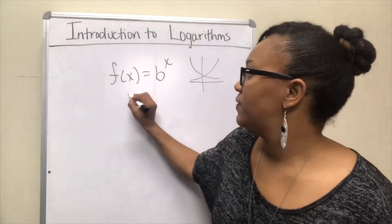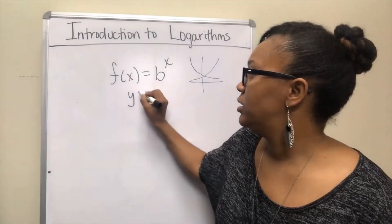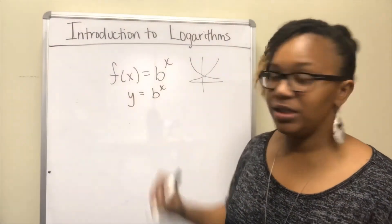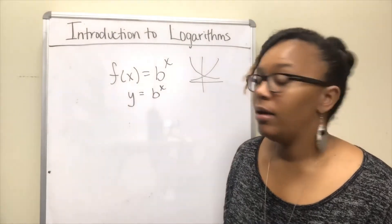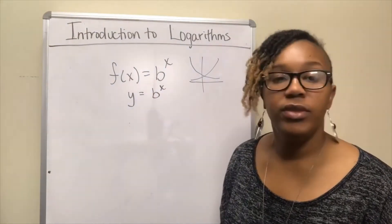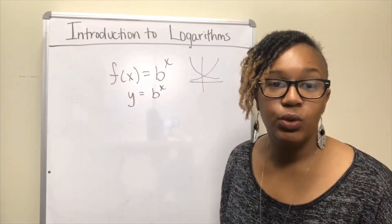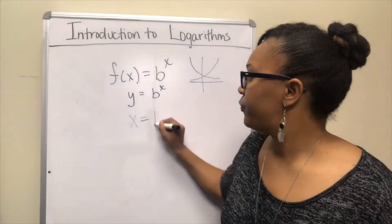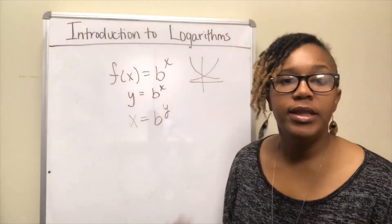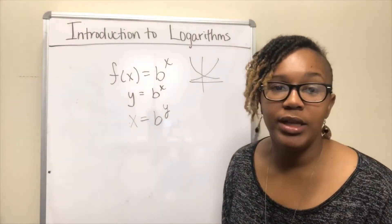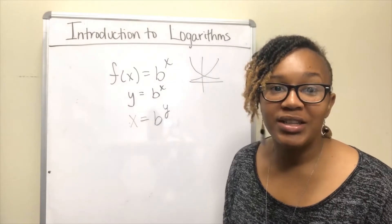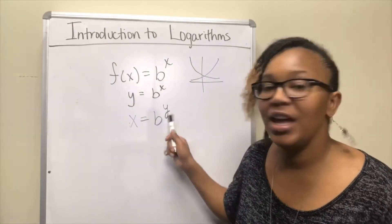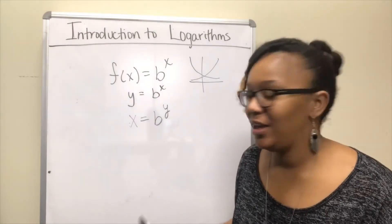So how do we find the inverse? First, I'm going to rewrite this so that it has a y in it. Recall that f of x is y, so I just replaced that. The next step to find the inverse is to switch x and y, and then solve for y. And when you try to solve for y, it becomes impossible to take y out of the exponent.